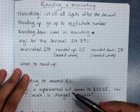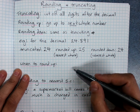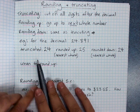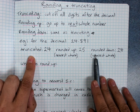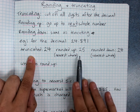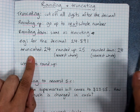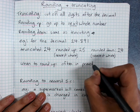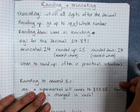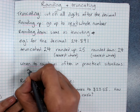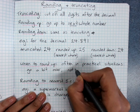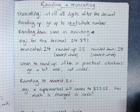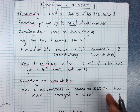Sometimes it's really important that you round up, and often this is in practical situations. If I measured a piece of timber I needed and discovered it was 21.8 centimeters long, I'm never going to round down because my piece of timber will be too short and it won't work. Too long, I can cut that back, but too short, I need a whole new piece of timber. So often in practical situations you go a bit over, not a bit under — you don't want to be going back to the shop because you rounded down and got too little.